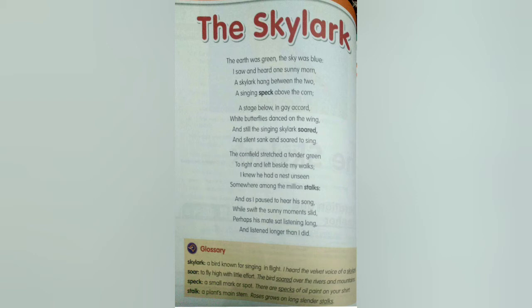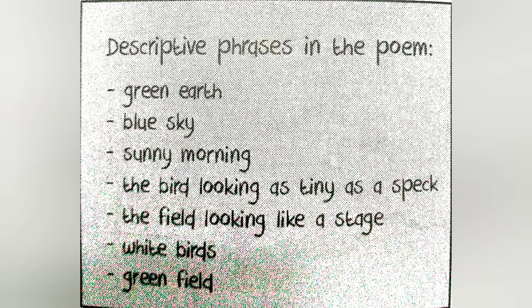The poet describes the sight and moment of a singing skylark in a cornfield. This helps us imagine a green cornfield and a bird flying in the blue sky. While reading the poem, adjectives such as green earth, blue sky, sunny morning, white birds, and green field help us create images in our minds.